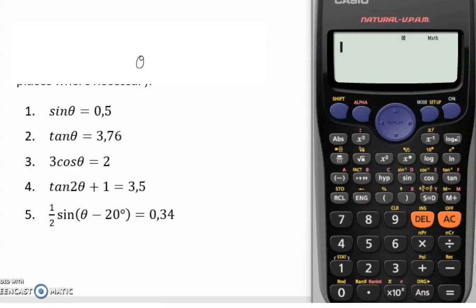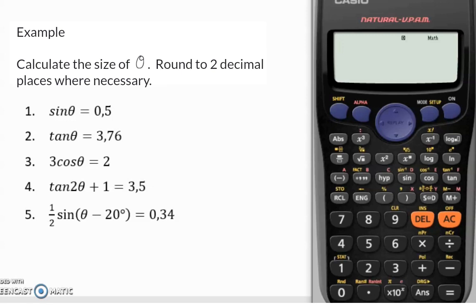Calculate the size of theta, round to two decimal places where necessary. In the first question, we need to determine the angle size that will give us a sin ratio of a half. And we just saw that that happens when the angle is 30 degrees.